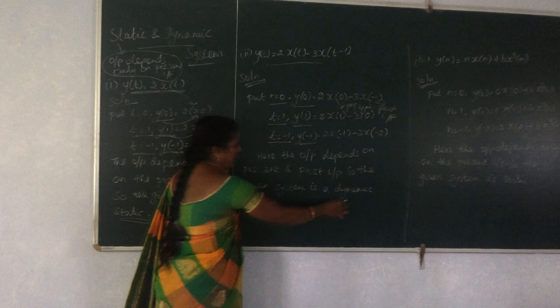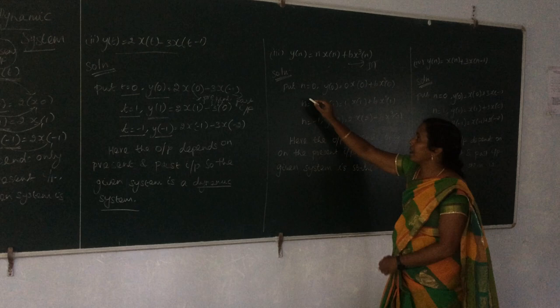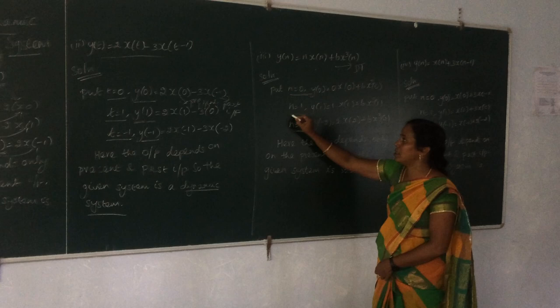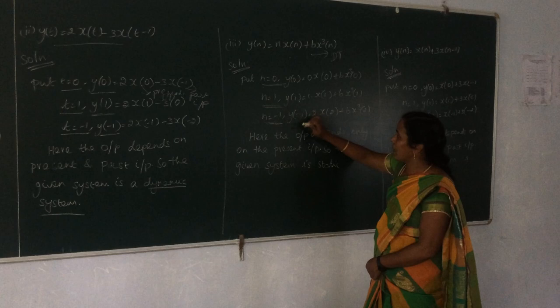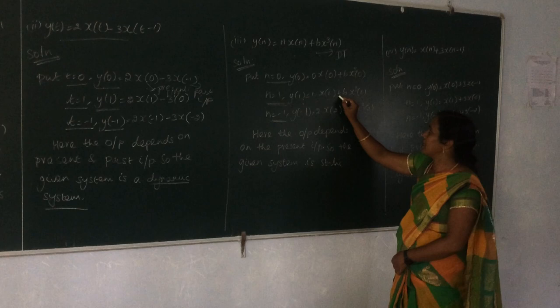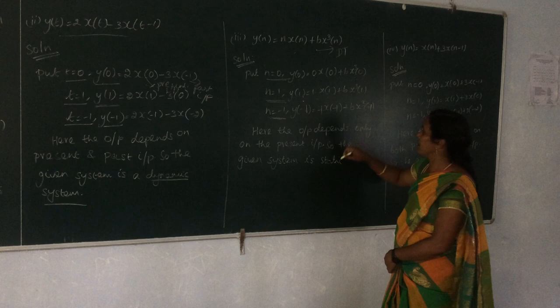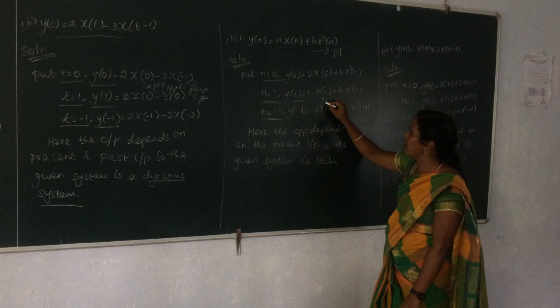The next problem is y[n] = n·x(1+n) + b·x³[n]. We evaluate at n = 0, n = 1, and n = -1. For y(0) we get 0·x(0) + b·x³(0); for y(1) we get 1·x(1) + b·x³(1); for y(-1) we get -1·x(-1) + b·x³(-1). In every case the output depends only on the present input, so the given system is again static.